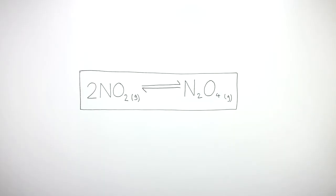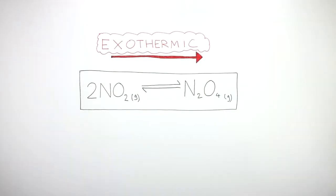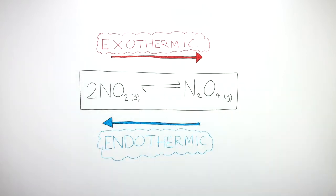In this reversible reaction, the forward direction is exothermic and the backward direction is endothermic. The forward and backward directions can be either exothermic or endothermic, depending on the reversible reaction.